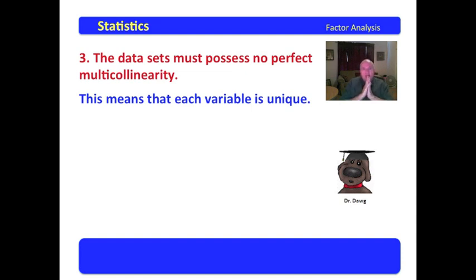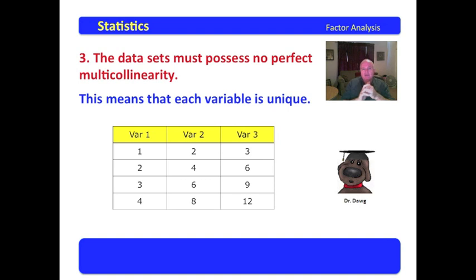Now, collinearity means that each variable is unique. For those of us that teach math or algebra who work with lines, what this really means is linearity. These can't be the same sets. If you look at this variable set 1, we have 1, 2, 3, and 4.